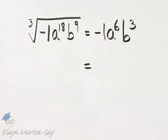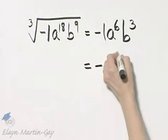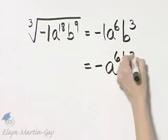So it's negative 1 times a to the 6th times b cubed, or simply negative a to the 6th b cubed.